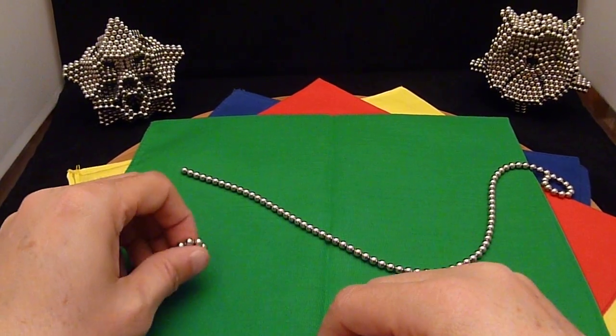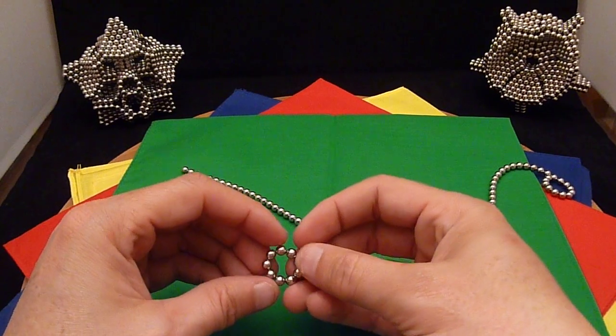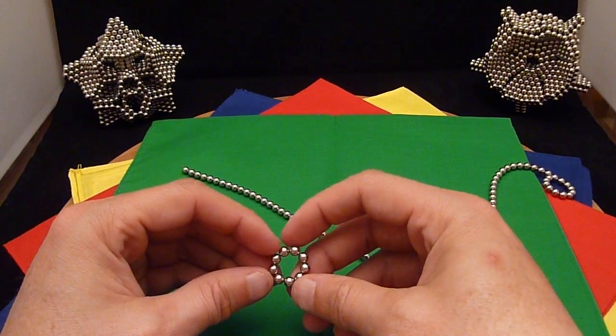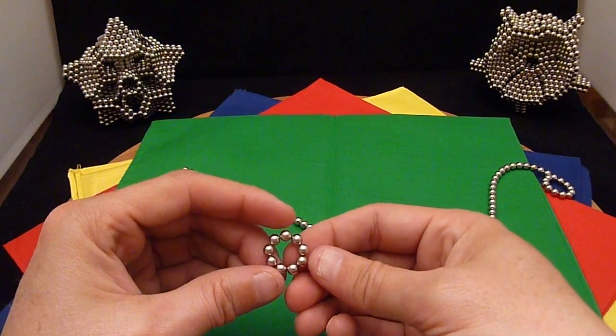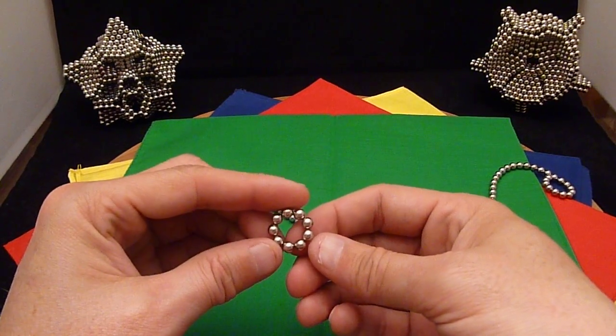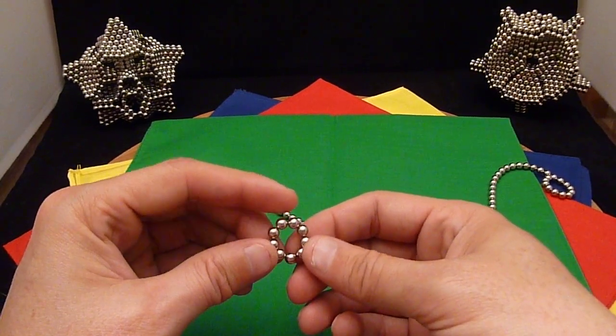Today I'm going to show you how to make a wheel. The wheel can be made with a subunit of a 6 ball, 9 ball, 12 ball, or 15 ball tube.